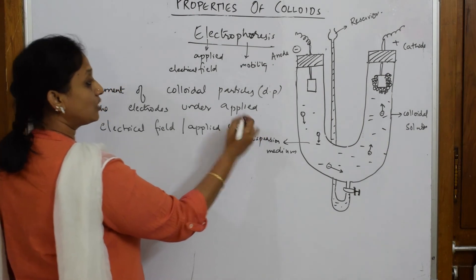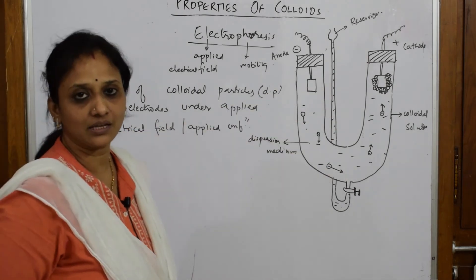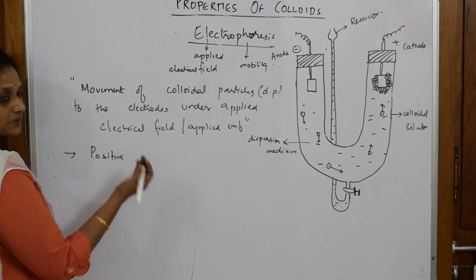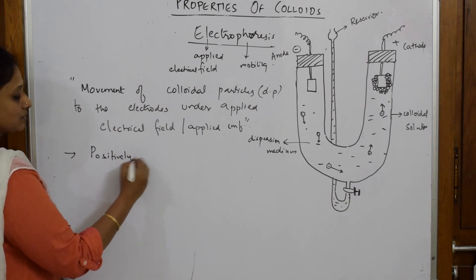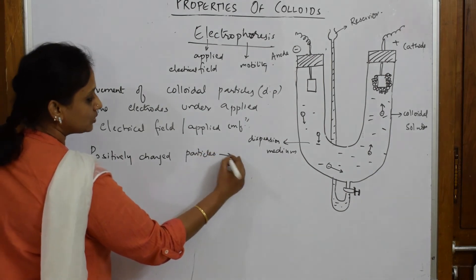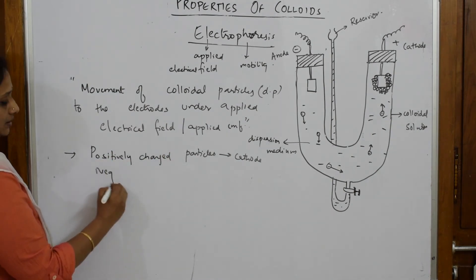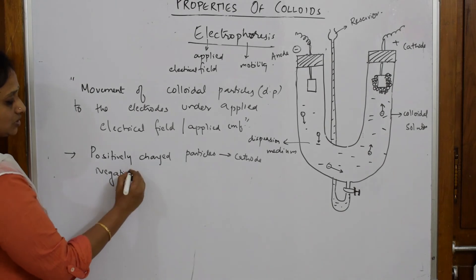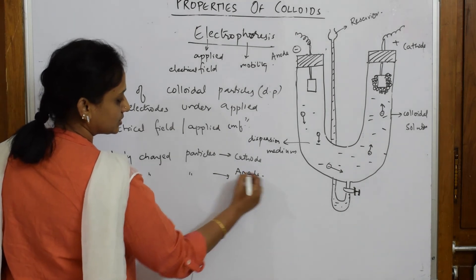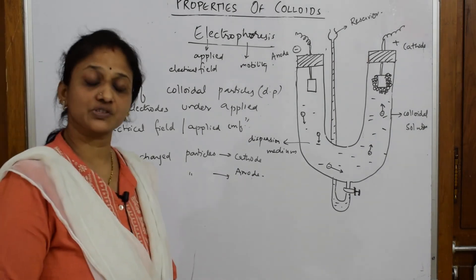Now, what actually happens? Simply, positively charged particles will move towards the cathode, and negatively charged particles will move towards the anode. So positively charged dispersed phase particles move towards the cathode — cation to cathode — and negatively charged, that is anion particles, move towards the anode. This movement is called electrophoresis.